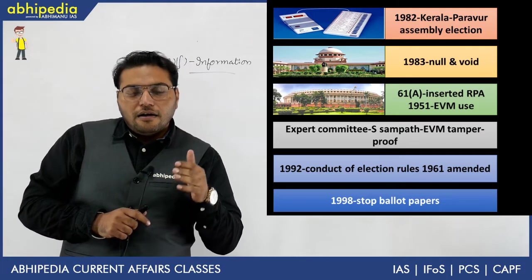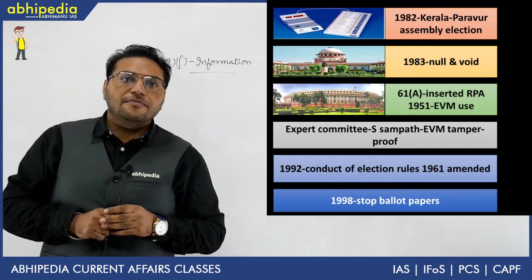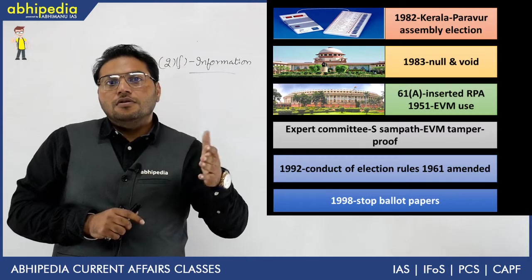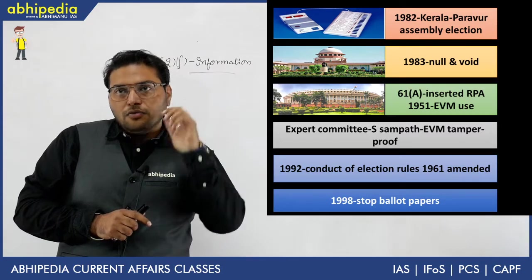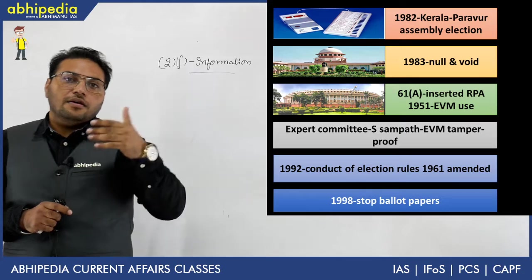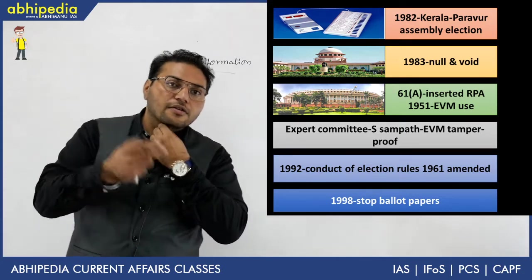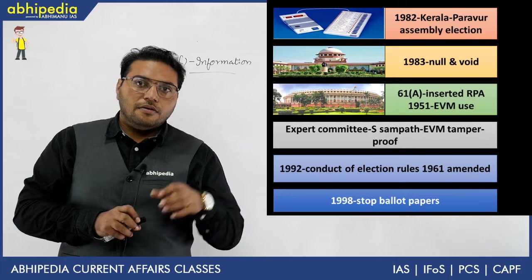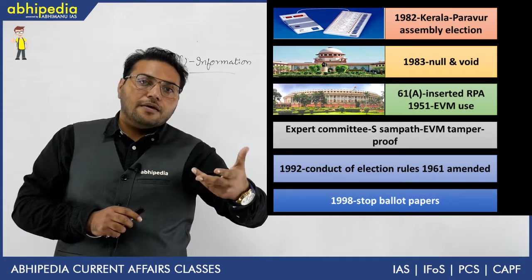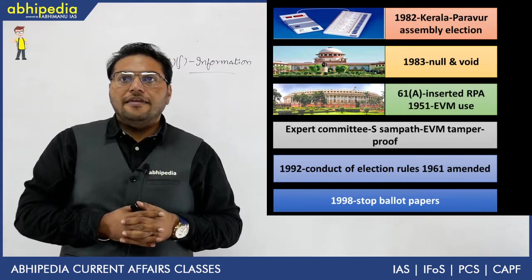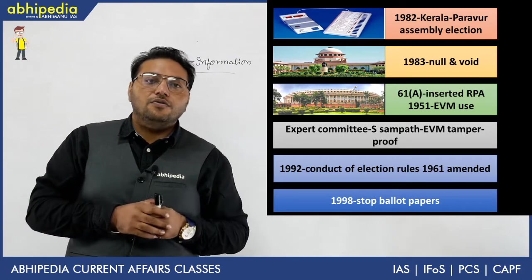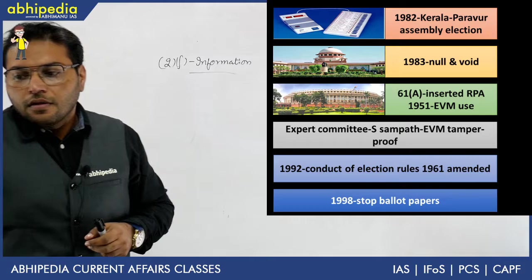EVM was included under the Representation of People Act (RPA) 1951, authorizing EVM for use in elections. After that, the Sampat Committee was formed, which is important from the prelims perspective. The Sampat Committee worked to make EVMs tamper-proof. In 1992, a further commitment was made, and by 1998, the use of ballot papers was discontinued.